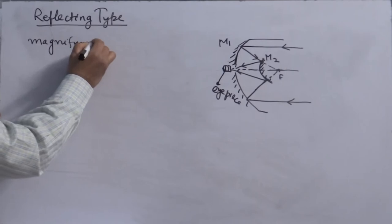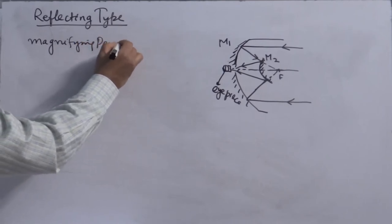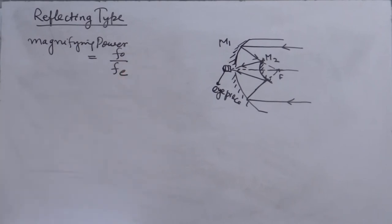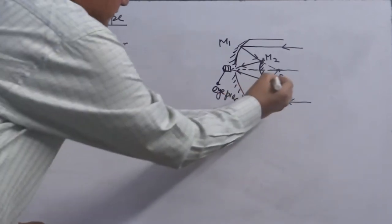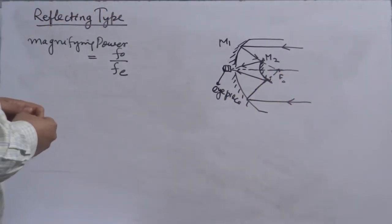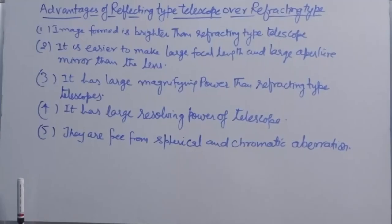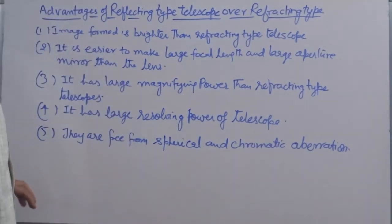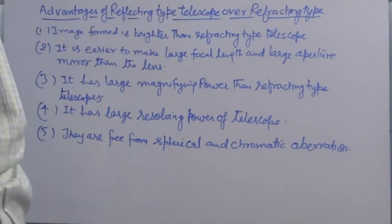The magnifying power of a reflecting type telescope is given by FO/FE, where FO is the focal length of the large parabolic mirror M1 and FE is the focal length of the eyepiece lens.